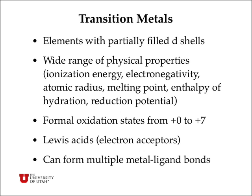Transition metals are elements with partially filled D-shells, and because it takes 10 electrons to fill each D-shell, we have a wide range of physical properties like ionization energy, electronegativity, atomic size, melting point, enthalpy of hydration, and reduction potential. We can have formal oxidation states of metals in complexes from 0, which is a little uncommon, to plus 2, which is very common, plus 3, which is common, all the way up to plus 7 for manganese. All the metals are Lewis acids — electron acceptors — and they can form multiple metal-ligand bonds.